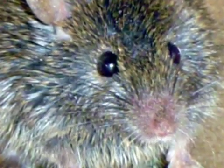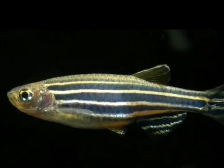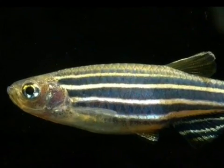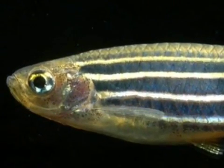All vertebrates have eye caps with single lenses. Single lenses consist of the iris, cornea, pupil, lens, vitreous gel, optic nerve, macula, fovea, and retina.